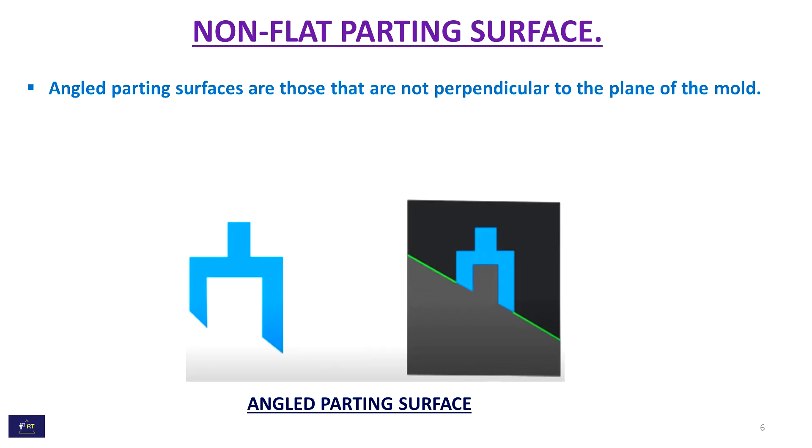Next one is angle parting surface. Angle parting surfaces are those that are not perpendicular to the plane of the mold. This is the simple image of angle parting surface.